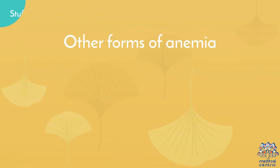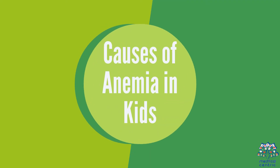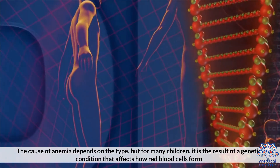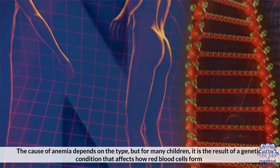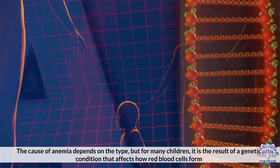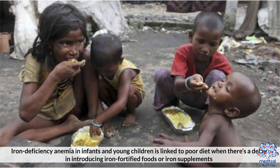Other forms of anemia have a variety of symptoms, but they can also develop without any symptoms. Causes of Anemia in Kids: The cause of anemia depends on the type, but for many children it is the result of a genetic condition that affects how red blood cells form. Iron deficiency anemia in infants and young children is linked to poor diet, such as a delay in introducing iron-fortified foods or iron supplements.